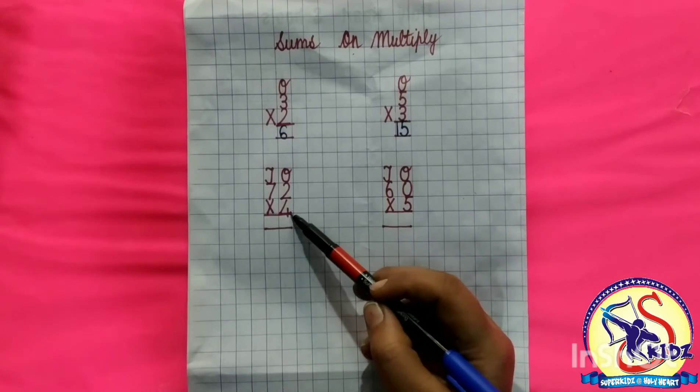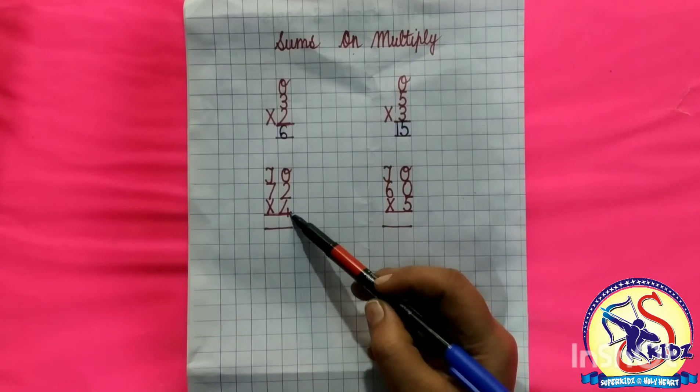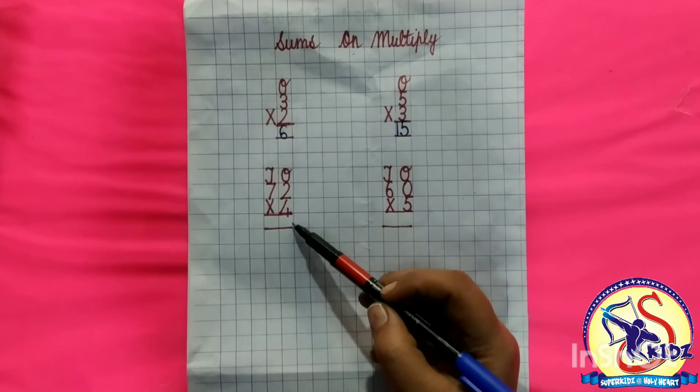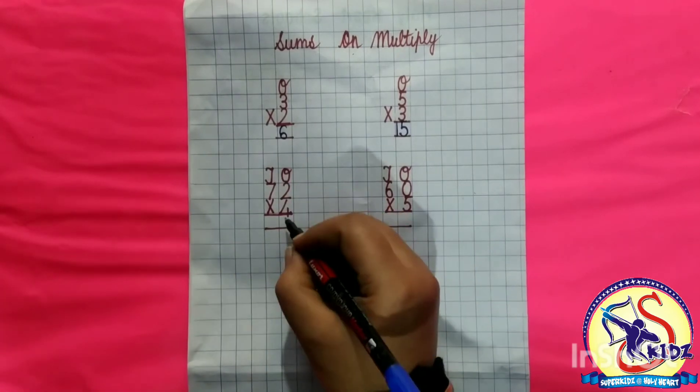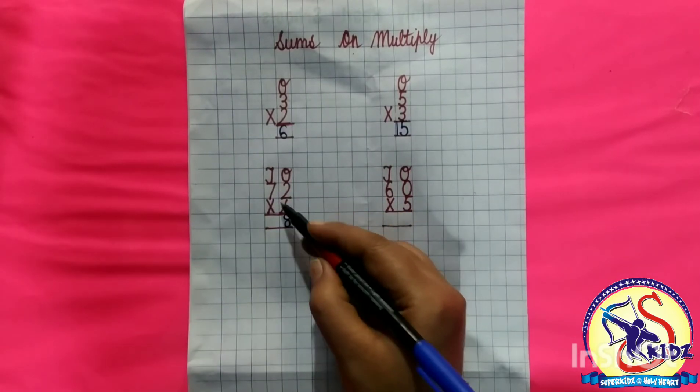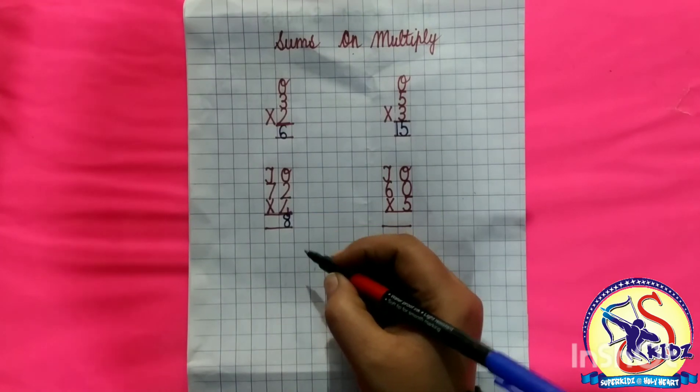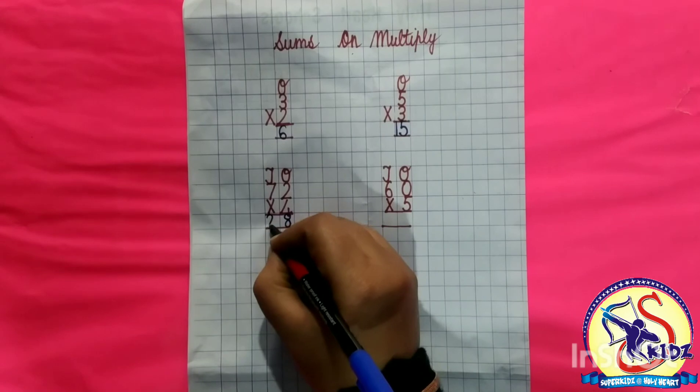We will always start multiplication from right side. 4 into 2 equals to 8. So answer is 8. 4 into 7 equals to 28. So answer is 28.